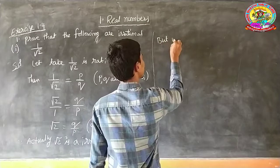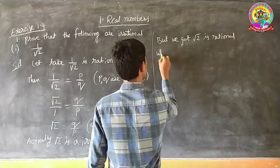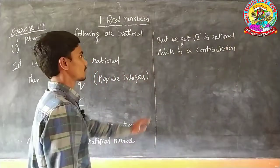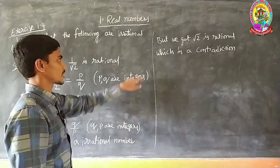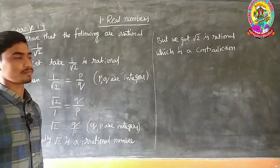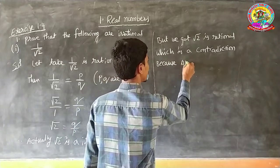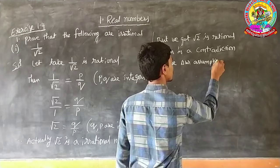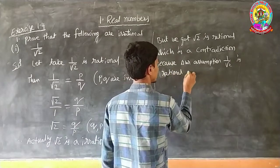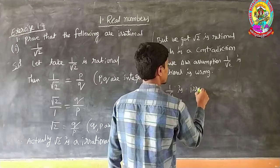Root 2 is an irrational number, but we got root 2 is a rational number — which is a contradiction. Contradiction means both statements are different and not giving the same answer. This statement says root 2 is actually irrational, but that is showing it as rational. Why did we get a contradiction? Because our assumption that 1 by root 2 is rational is wrong.